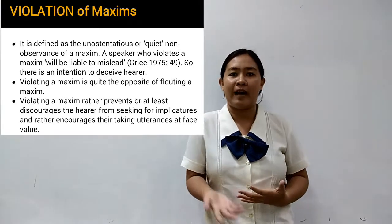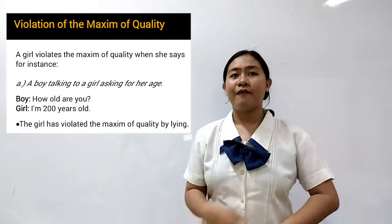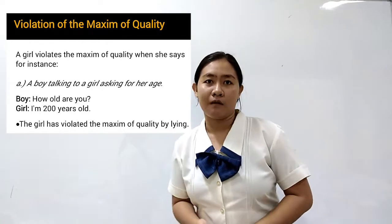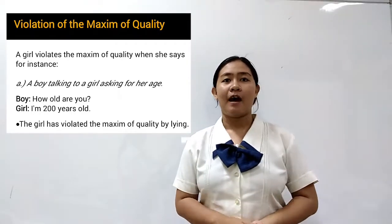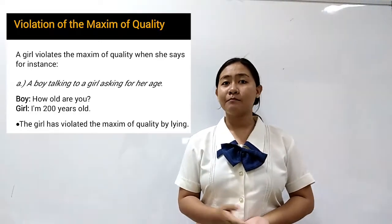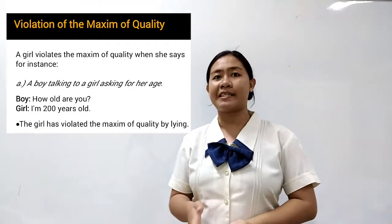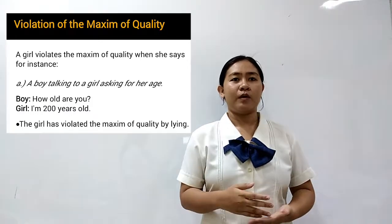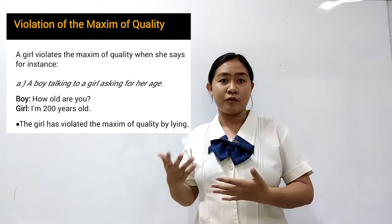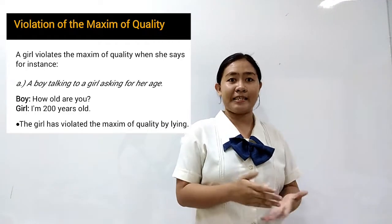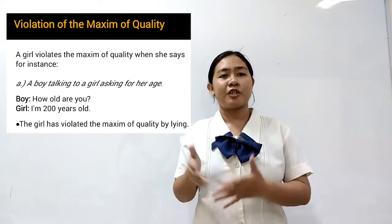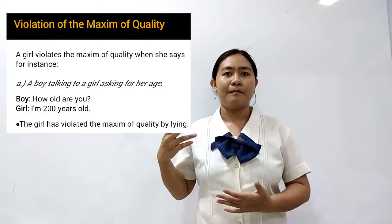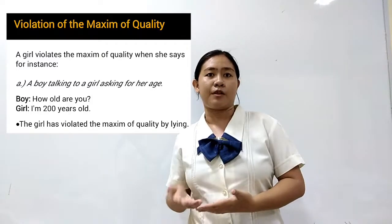Example: violation of the maxim of quality. A boy is talking to a girl asking for her age. The boy asked, 'How old are you?' The girl replied, 'I'm 200 years old.' The girl violates the maxim of quality when she lied to the boy. It is unbelievable that a 200-year-old person exists in our generation, so the maxim of quality — to tell the truth — was broken because the girl lied to the boy.